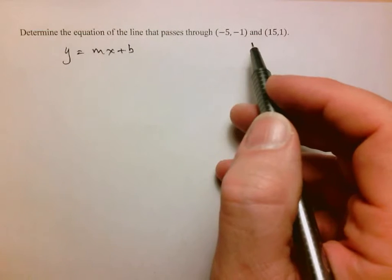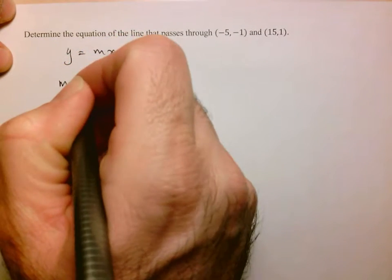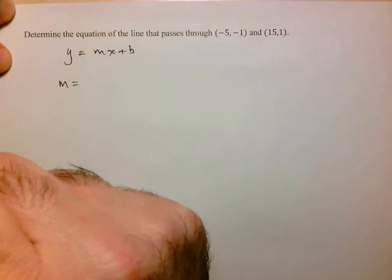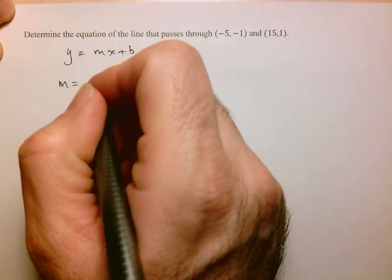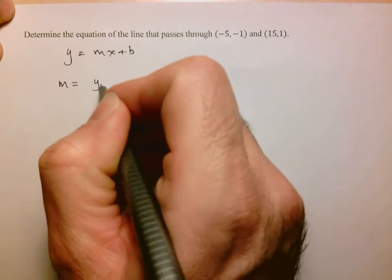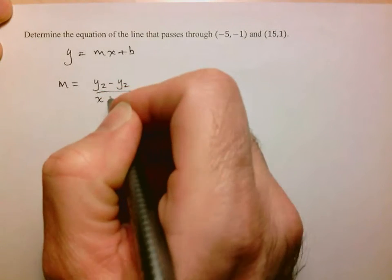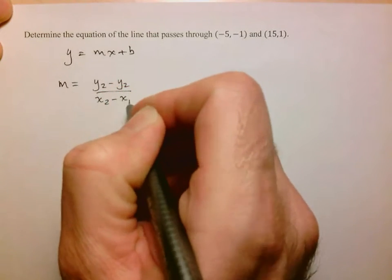So the first thing that we're going to have to determine is the slope. Recall that the formula for the slope is the difference in the y's divided by the difference in the x's. So first I'm going to subtract the two y values and then take the ratio with the difference of the two x values.